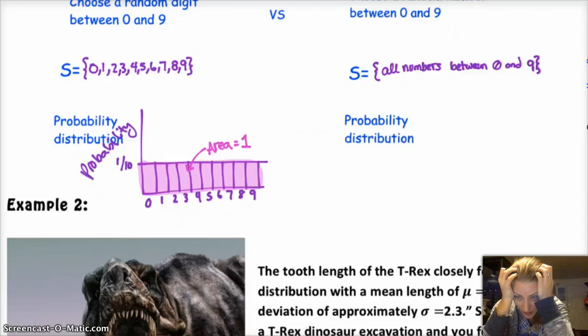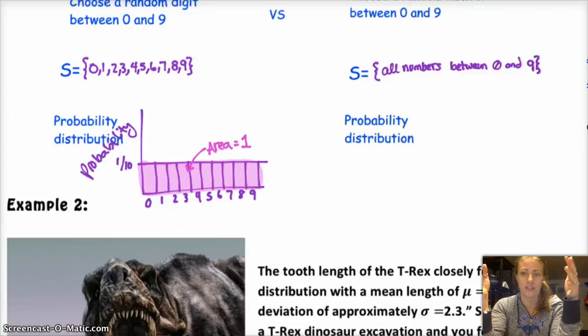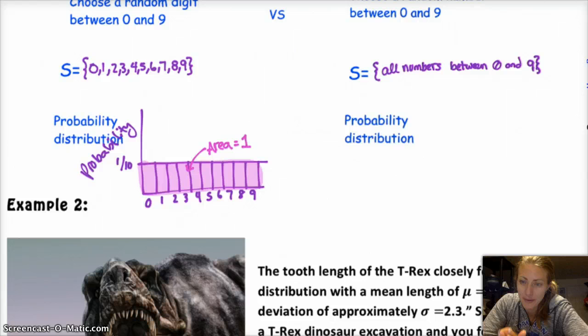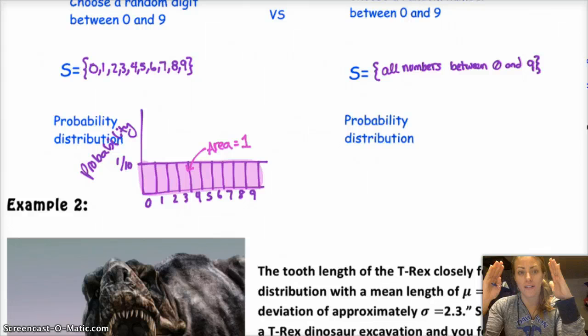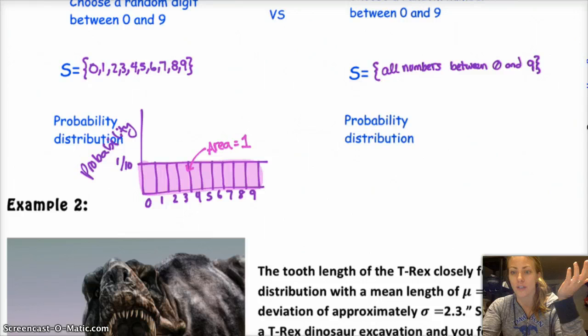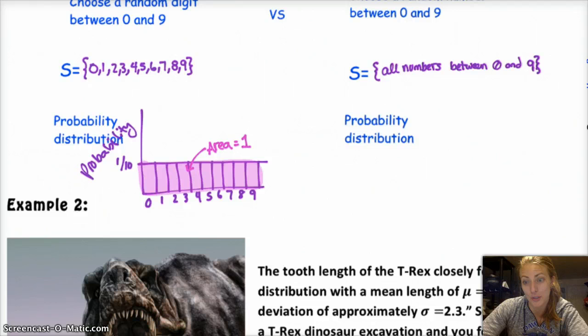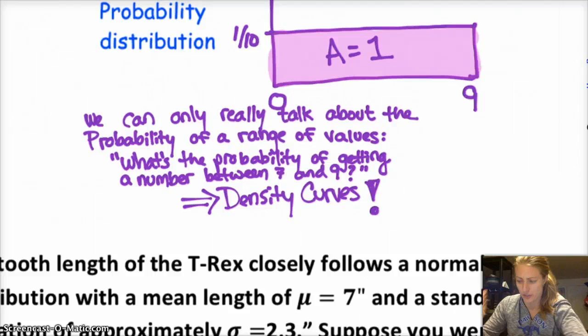So it makes a lot more sense to say, oh, it's the probability of the number being between 3 and 4, or 7 and 10, or whatever. But that brings us back to density curves, right? Because it should be positive. Remember density curves, area is 1, and the area of the region that you want corresponds to the probability of that region happening. So this actually is very much related to what we've done in the past with normal distributions and density curves.